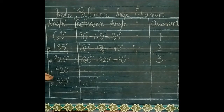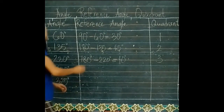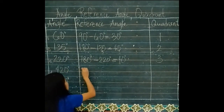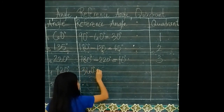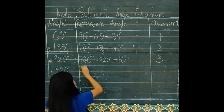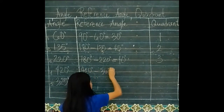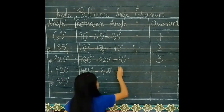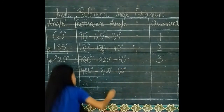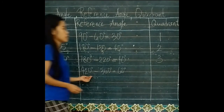For 420 degrees: 420 degrees minus 360 degrees equals 60 degrees, and so 420 degrees is in Quadrant 1.